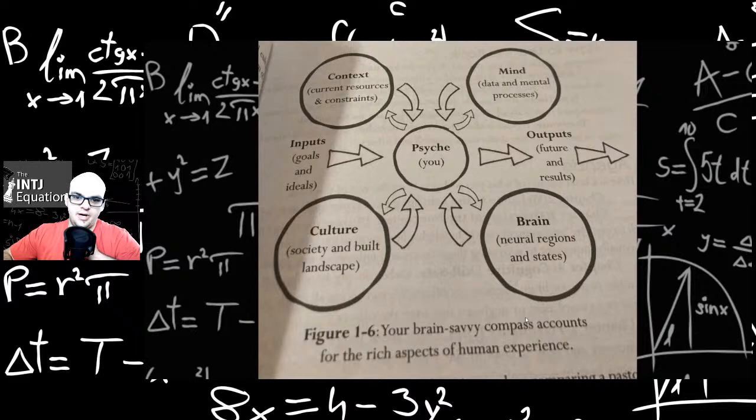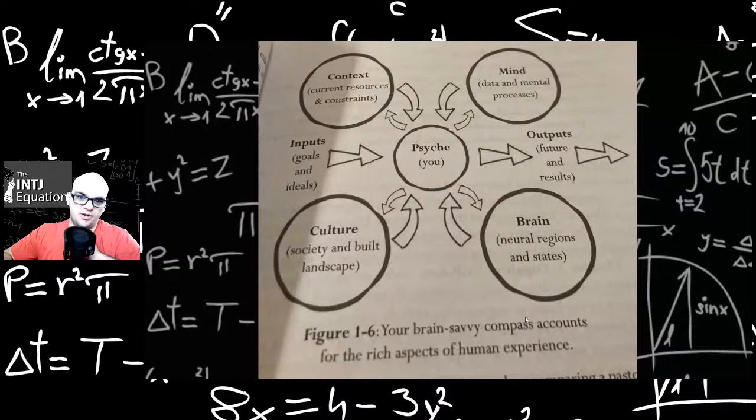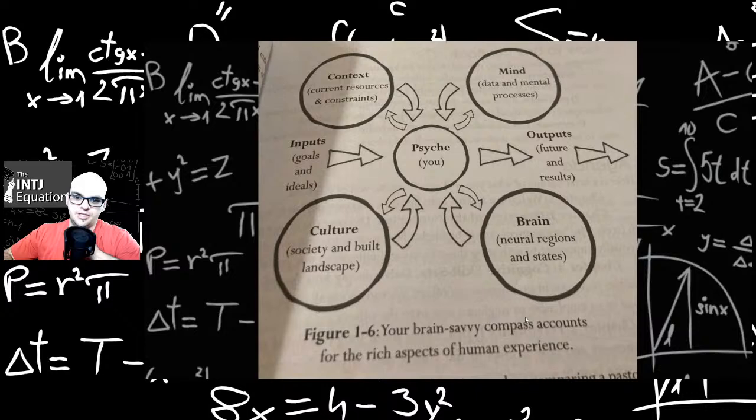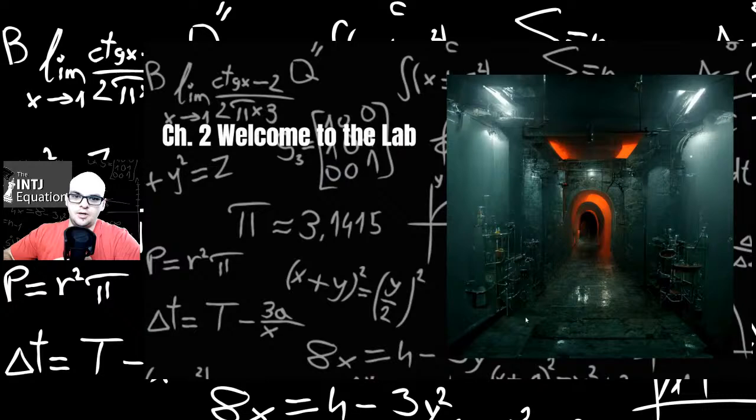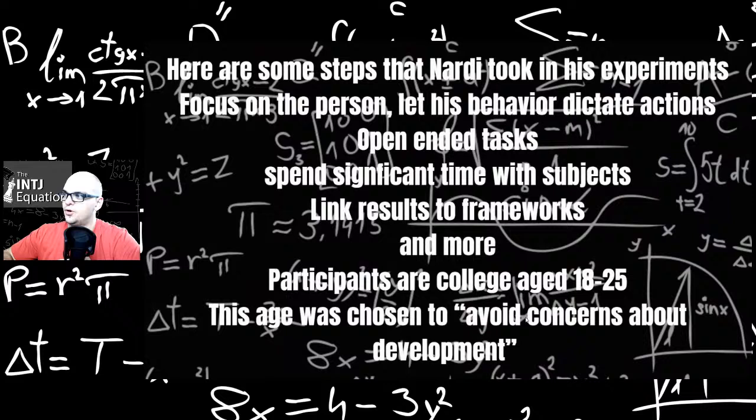Here is a diagram. The psyche in the middle is you, and outputs for future and results, and inputs or goals and ideas. There's context, mind, data processing, neural regions and states and culture. Chapter two, Welcome to the lab. He just kind of introduces his work area here.